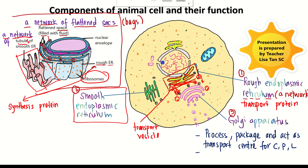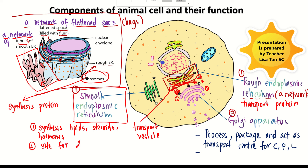So what is the function of smooth ER? Number one, smooth ER synthesizes lipids, steroids, and hormones. Number two, smooth ER is also a site for detoxification. Detoxification is a process that removes toxins from our body. In our liver cells, we have an abundance of smooth ER for detoxification.